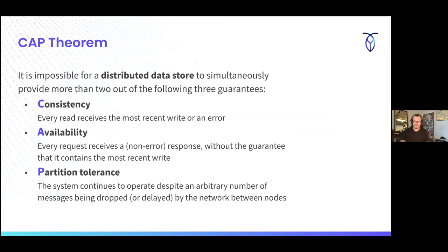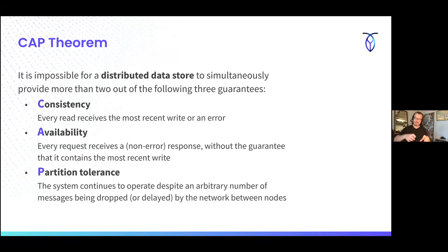Let's get into the CAP theorem. The CAP theorem basically states that it's impossible for a distributed data system to simultaneously provide these three guarantees: consistency, availability, and partition tolerance. Consistency means every read is going to return the right data or an error. Availability means you're going to have access to the system. Partition tolerance means in a distributed system, it can tolerate the disconnection of pieces of that system — if a network fault happens between nodes or a node gets separated, it's going to be able to tolerate that.